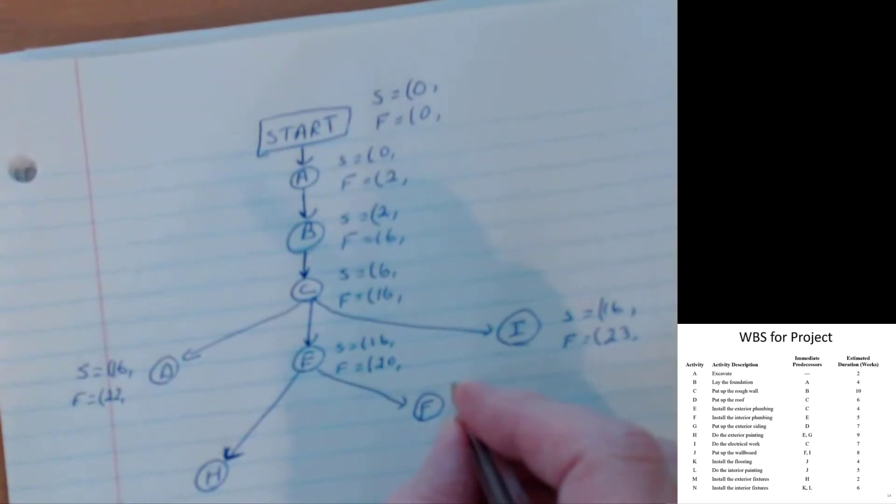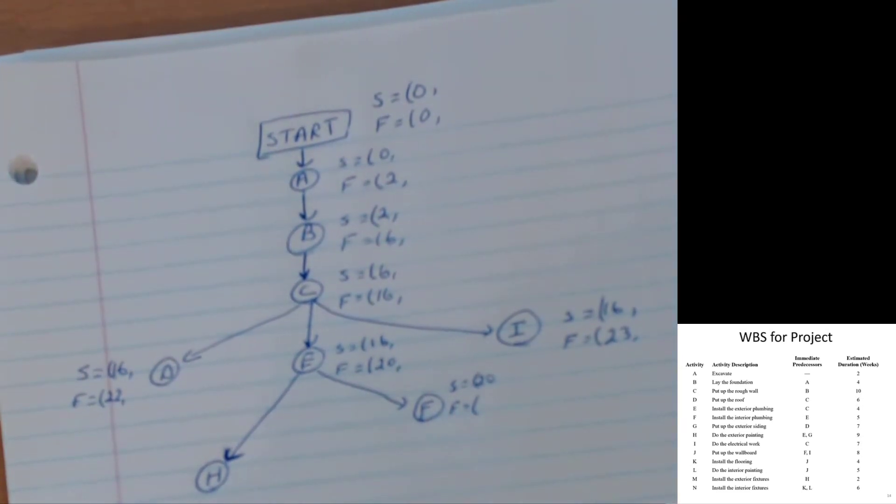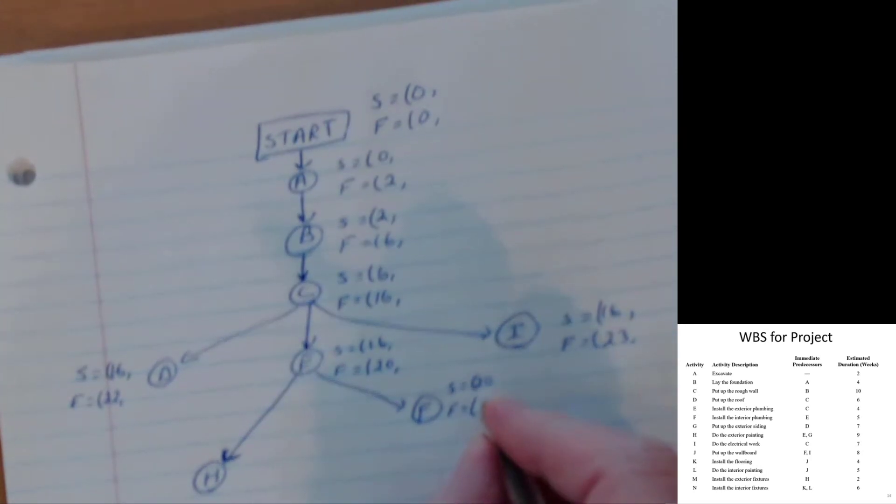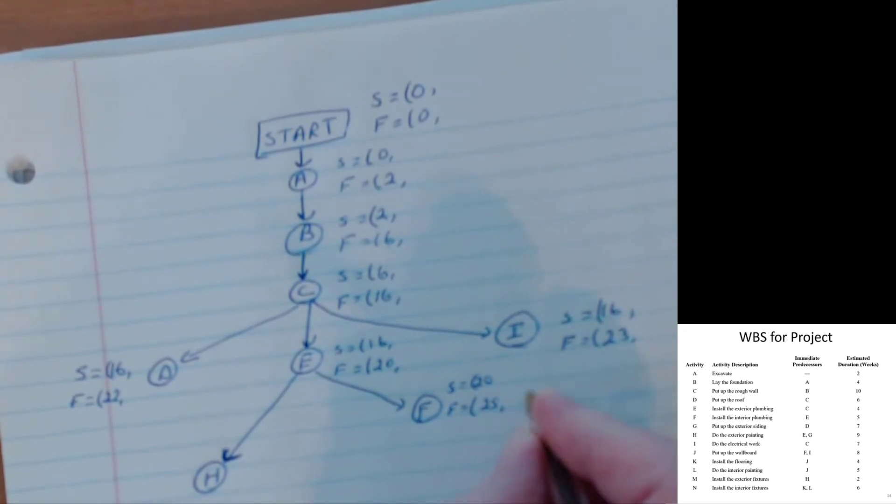But let's look at F. F can start when E is done, which is period twenty. F finishes when? F finishes in five weeks. So F can finish in period twenty-five.